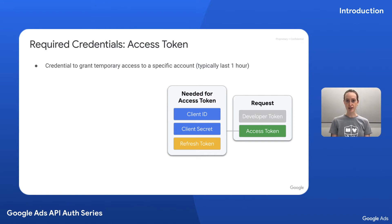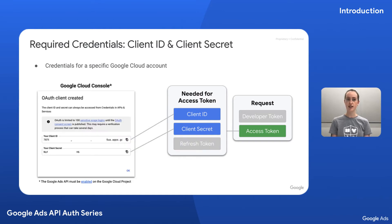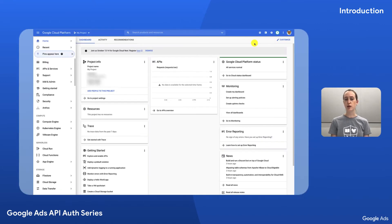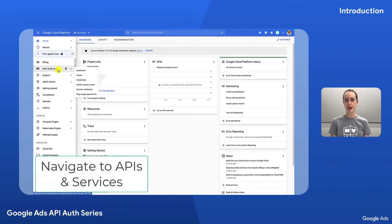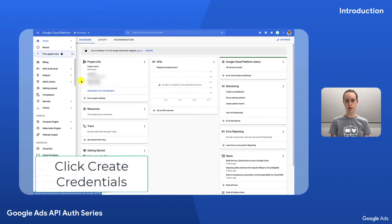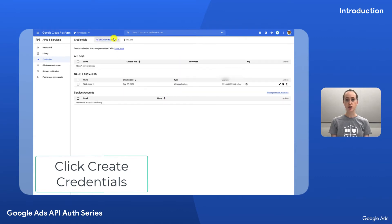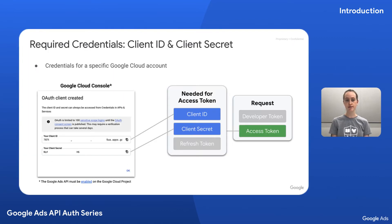In order to get an access token, you'll need a client ID, client secret, and a refresh token. To obtain a client ID and client secret — which are credentials for a specific cloud account — open your Google Cloud project or create a new one if you don't already have one. Then head to the APIs and services section, navigate to credentials, and click credentials. Select OAuth client ID and follow the instructions. It's important to note that you must enable the Google Ads API in the library of the APIs and services section.